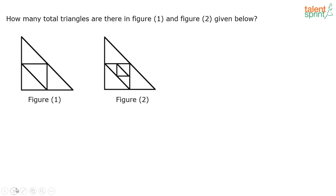14 is the answer. Those giving 5 and 9 as separate answers are wrong — read the question properly. What is being asked is how many total triangles are there in the figures. Total is not 5 or 9 separately; it's 5 plus 9, which is 14.